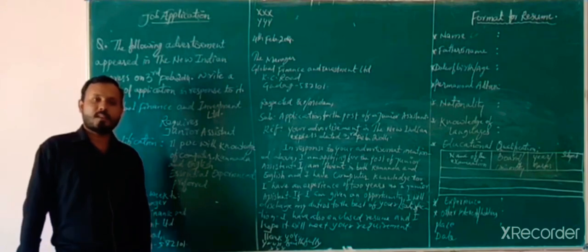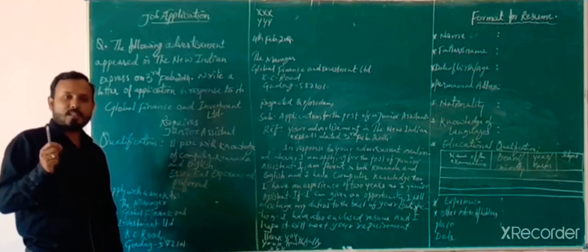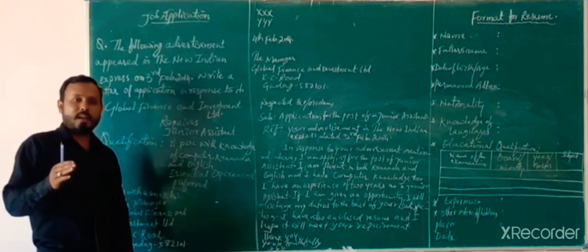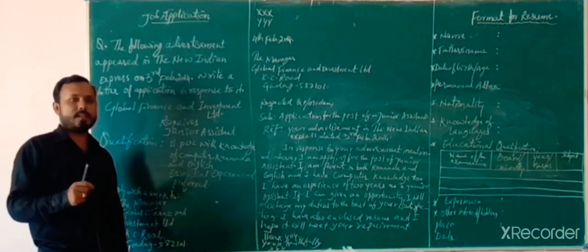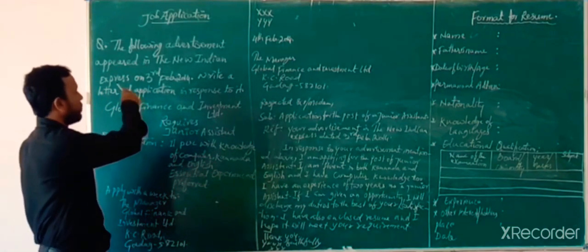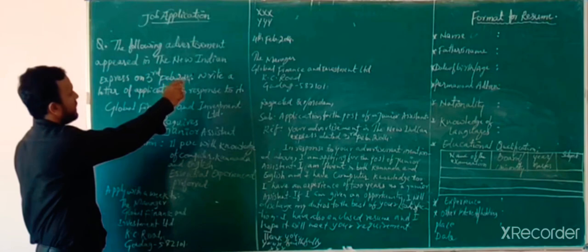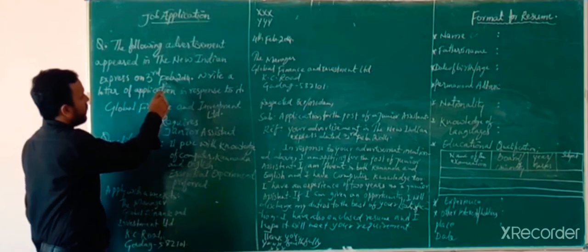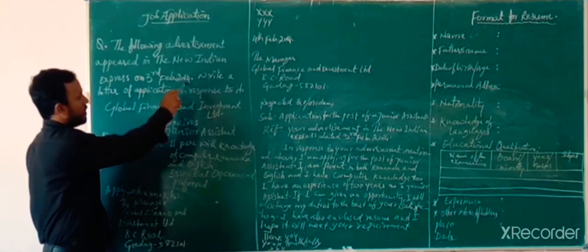Without much time, let me start. First, when you get the question, you have to read it carefully, because the name and address of the receiver and the reference will be found there, as well as the post. For example, the question says: the following advertisement appeared in the New Indian Express on 3rd February 2014, according to your workbook.